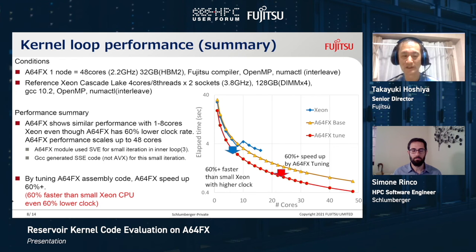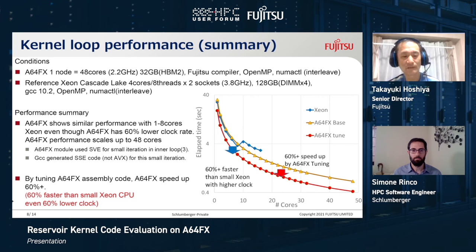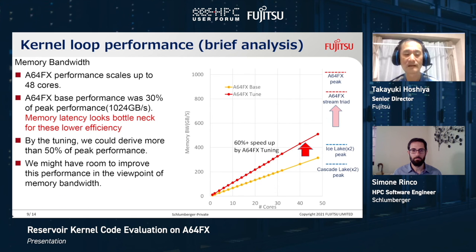It might be reasonable not to use SIMD in this case. The red line shows the result of our assembly tuning on the A64FX, and we could see more than 60 percent performance improvement. Please note this is 60 percent better performance than Xeon from one to eight cores, even though A64FX has a 60 percent lower clock rate.